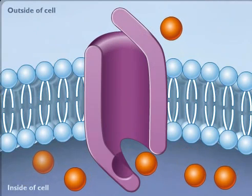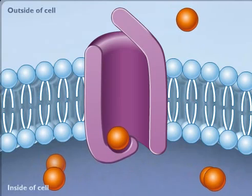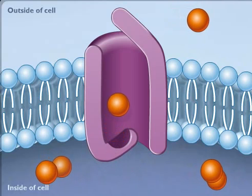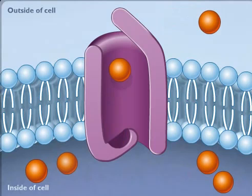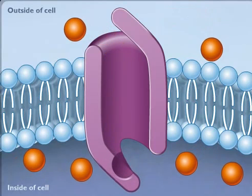Facilitated diffusion can occur in either direction depending on the concentration gradient. If there is a higher concentration of the particular molecule inside the cell, the same carrier protein would then transport the molecules out of the cell.